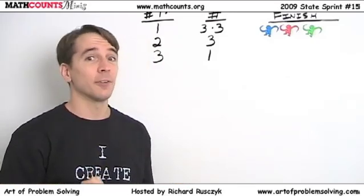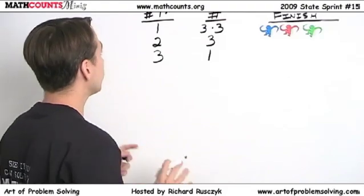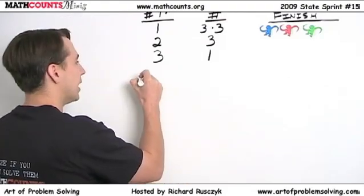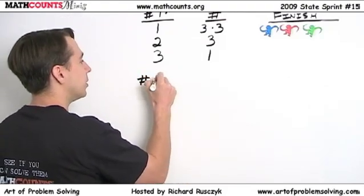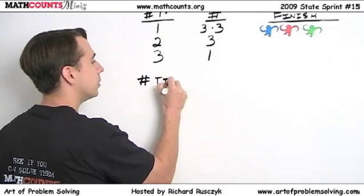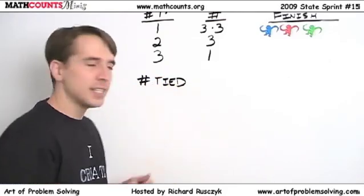So we're going to do this problem again. We're going to do it in a slightly different way. All right, here's what we're going to do. We're going to do this by the number of people tied. We're going to organize our cases this way.